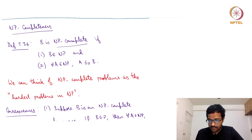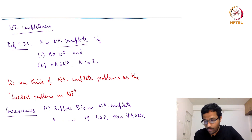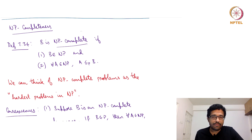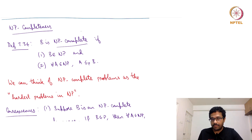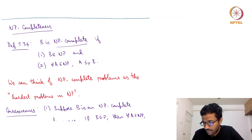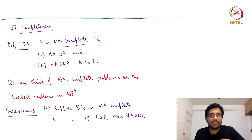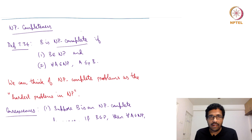The definition — numbers are from Sipser 7.34. A language B is NP-complete if, first of all, B must be in NP, and all A in NP must be reducible to B in polynomial time. All the languages A should be reducible to B in polynomial time, and there are several languages that are known to be NP-complete.